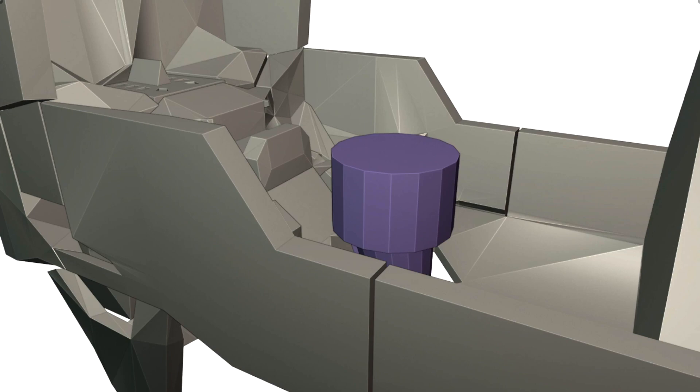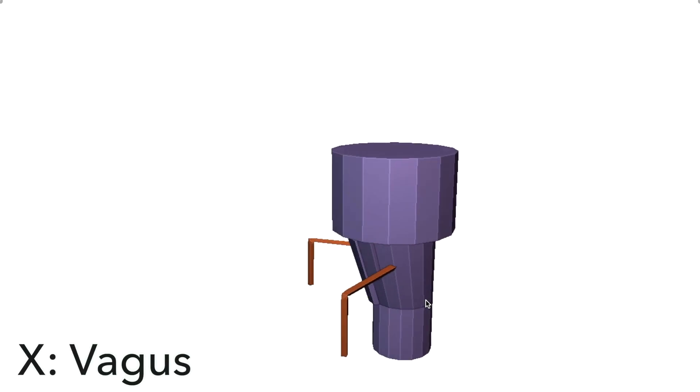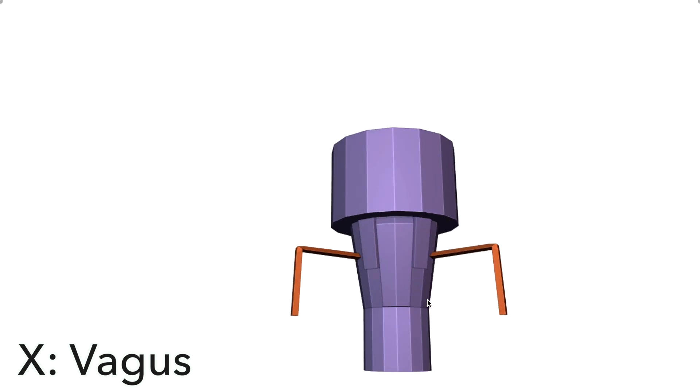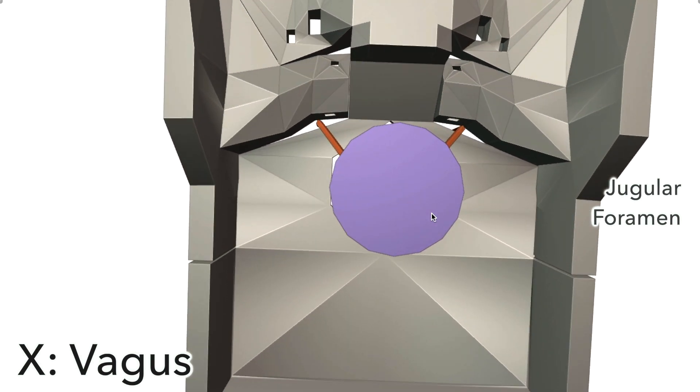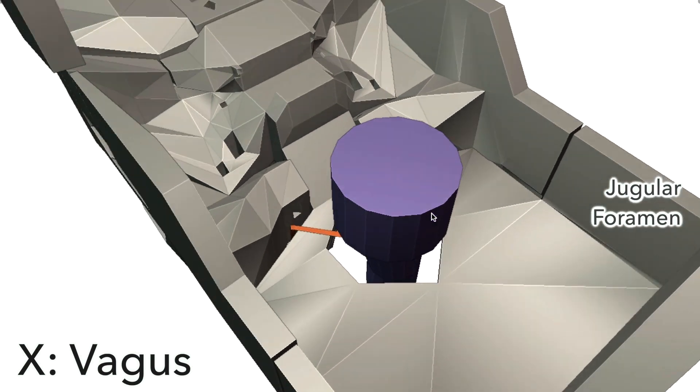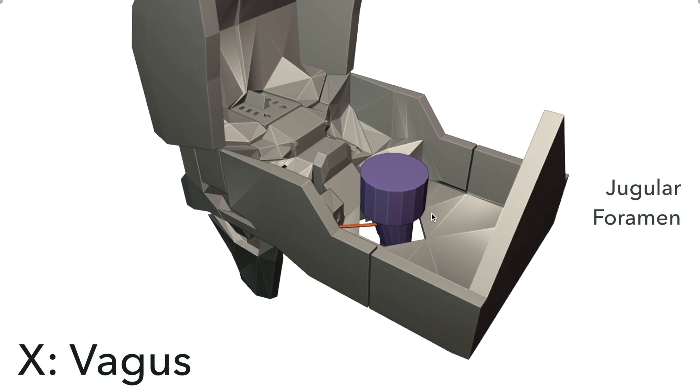Number 10 we're up to now. It's the vagus nerve, which originates just below the last one, in the posterolateral sulcus of the medulla. It too heads through the jugular foramen, and it travels far, which is reflected in its name. Vagus means wanderer in Latin.